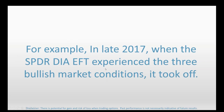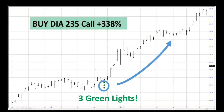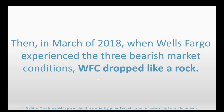For example, in late 2017, when the SPDR DIA ETF experienced the three bullish market conditions, DIA ended up taking off like a rocket. The three green lights are three distinct individual market conditions we put on a chart so you can visualize when they trigger. We told our followers to buy the DIA 235 calls, and those ended up jumping in value by 338%. In dollar terms: $200 risk grows to $876, or $1,000 turns into $4,380.